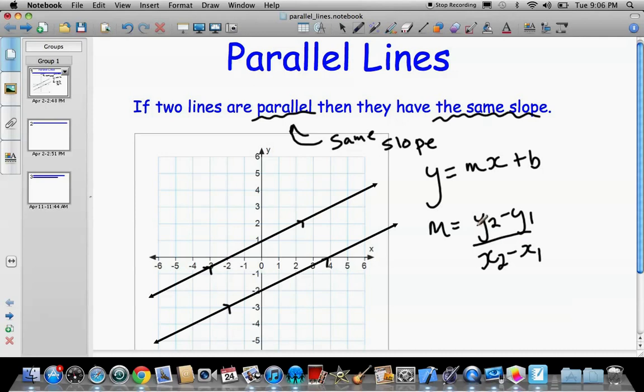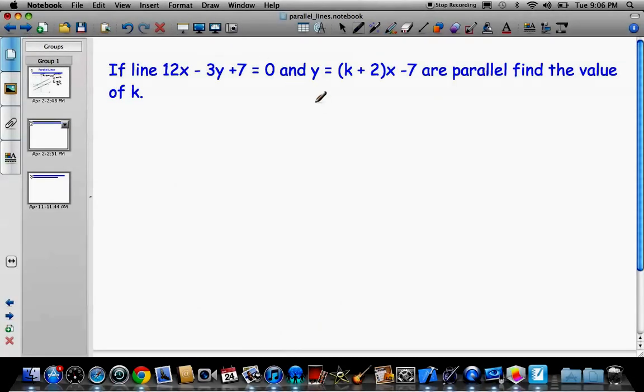So sometimes, it depends on the question, you'll have to use either one of these. So we'll look at a couple of examples. So this one says, if line 12x minus 3y plus 7 equals 0, and y equals (k plus 2)x minus 7 are parallel. So parallel, you should be thinking same slope. Find the value of k.